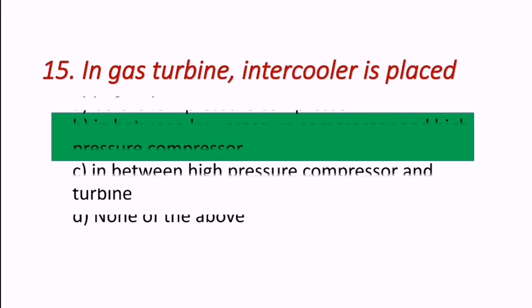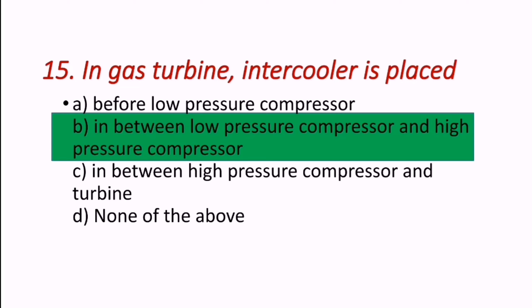Question: In a gas turbine, where is the intercooler placed? The intercooler is placed in between the low pressure compressor and the high pressure compressor.